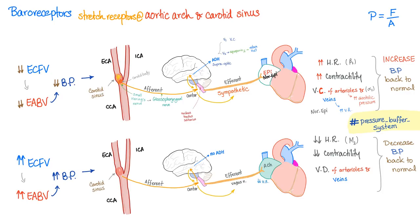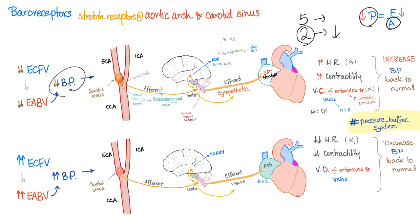Let's say you have a decreased extracellular fluid volume, which means decreased effective arterial blood volume, which means decreased blood pressure — because pressure is force over an area. When you have less volume, you have less pressure. Let's say five men are knocking on a door, and now only two men knock on the same door. The pressure on the door when two men are knocking is less because there is less force on the same surface area. The carotid sinus and carotid bodies sense this decreased pressure and send an afferent nerve — Hering's nerve, a branch of the glossopharyngeal nerve — going to the center.